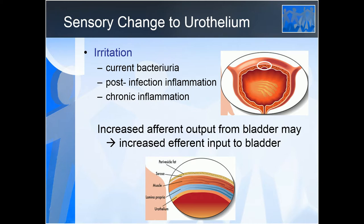Changes to the urothelium persist after a urinary tract infection has been treated — you get post-infection inflammation. Children very often have recurrent urinary tract infections, so the inflammation becomes chronic, changing sensation and reducing their ability to comfortably store urine. The urothelium becomes quite inhospitable, and depending on what's in the urine it can become even worse. This changes the balance of efferent activity and you get more contractions in the overlying detrusor muscle.